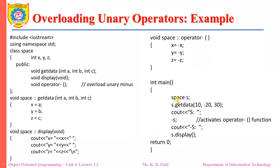Now let us see the main function. The object s is created of type 'space' and we have accepted the values of x, y, and z as 10, minus 20, and 30 respectively. When the unary minus operator is applied on those three values, the output should be reversed. To change the values of the three data members belonging to object s, we simply write minus s. Here s is the object and minus is the unary operator. This statement activates the operator function and changes the values of x, y, and z respectively.